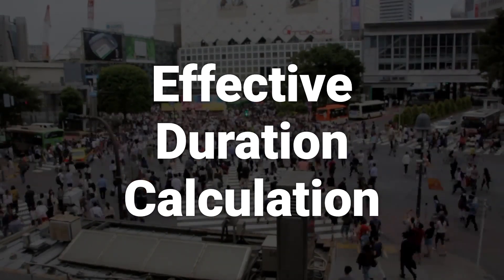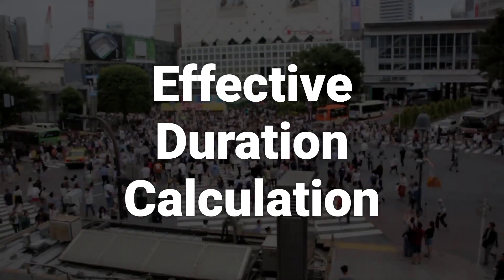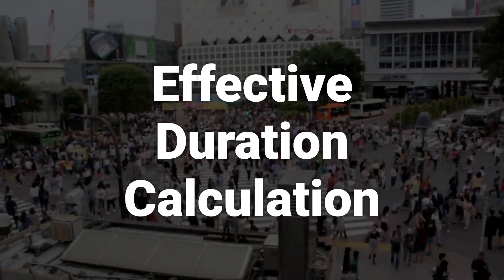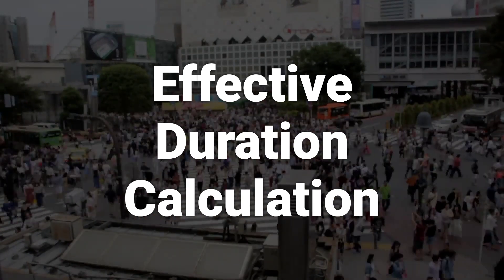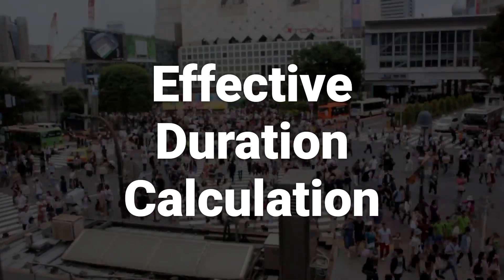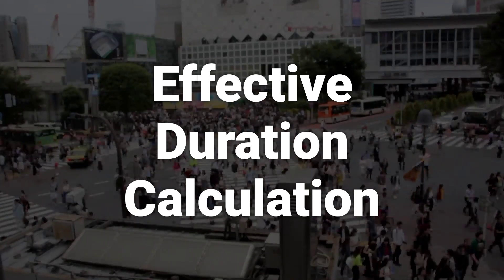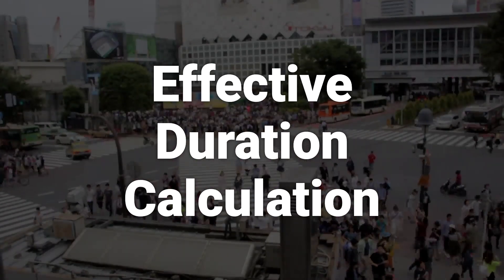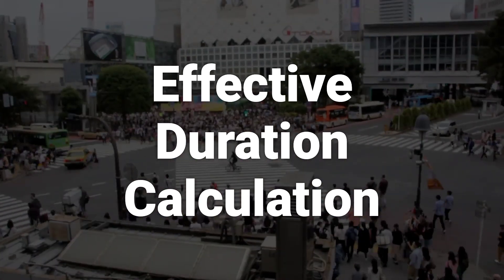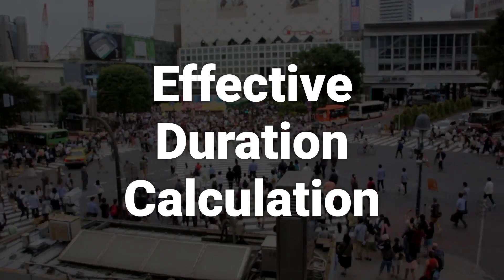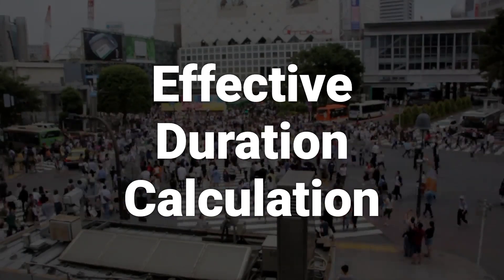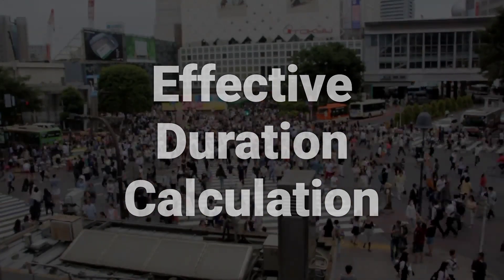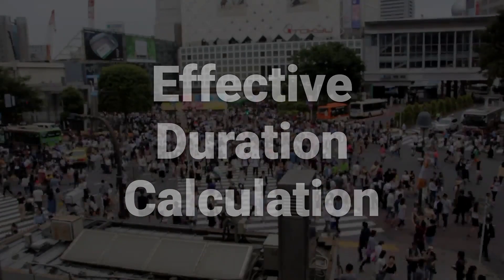The formula for effective duration includes four variables: P0, P1, P2, and Y. The complete formula is: Effective Duration = (P1 - P2) / (2 × P0 × Y). This formula helps in understanding how a bond's price is affected by changes in yield.